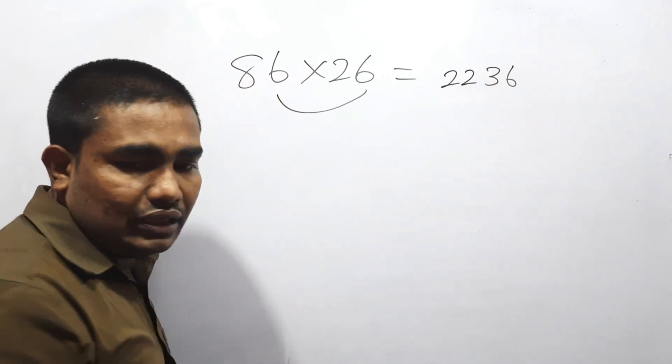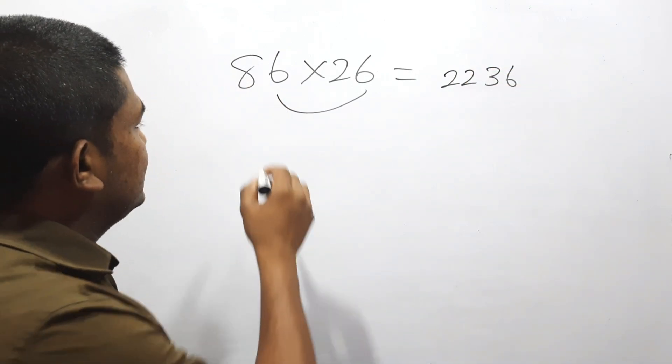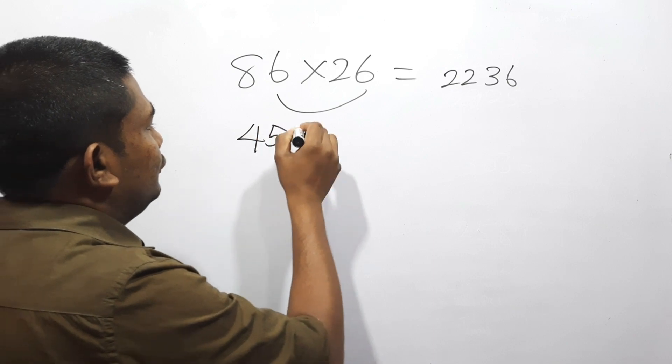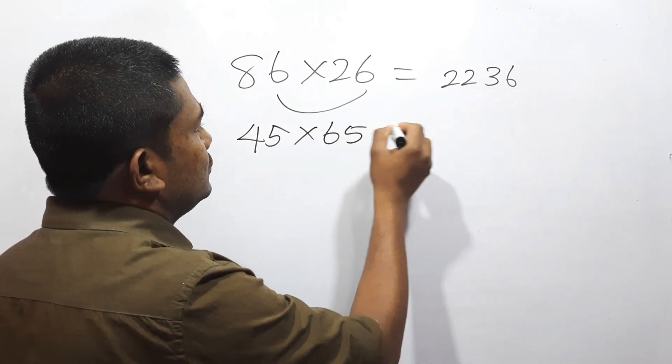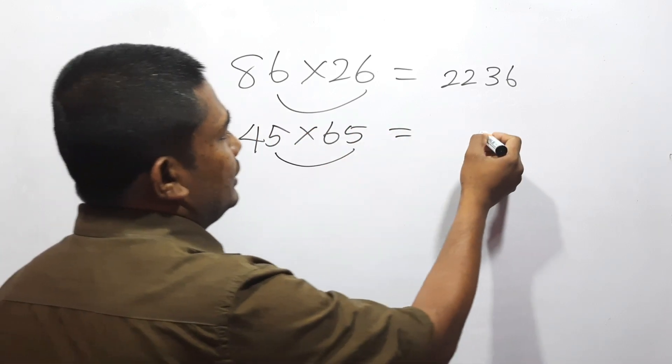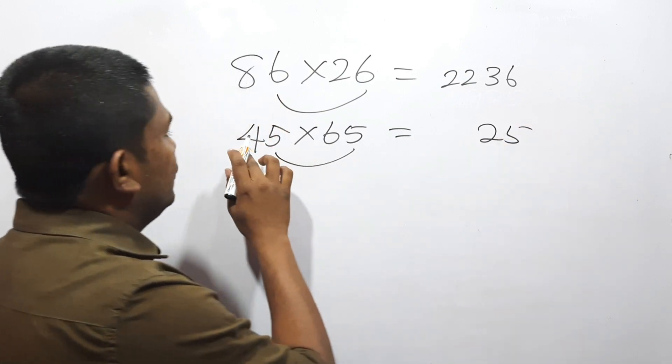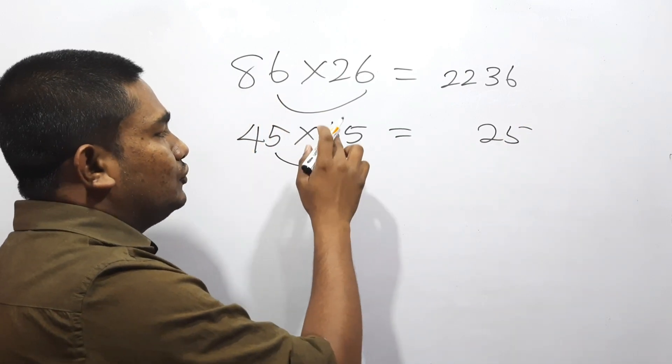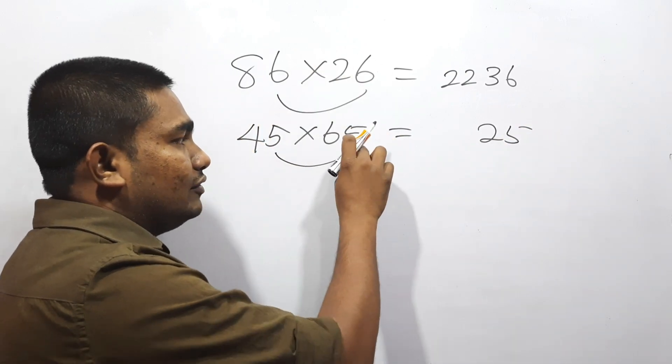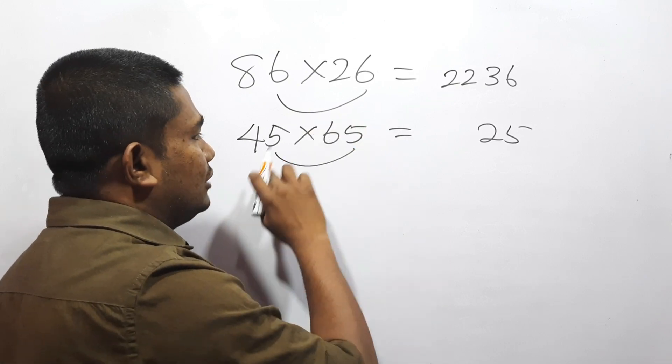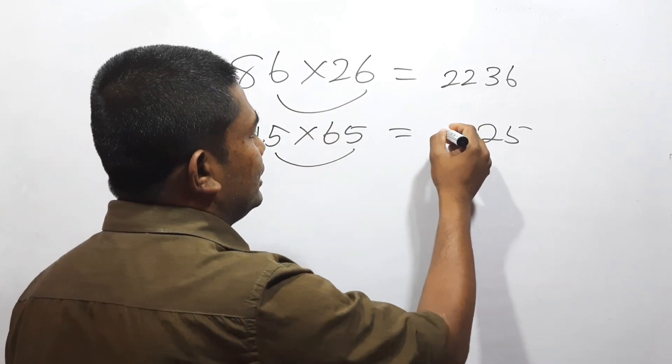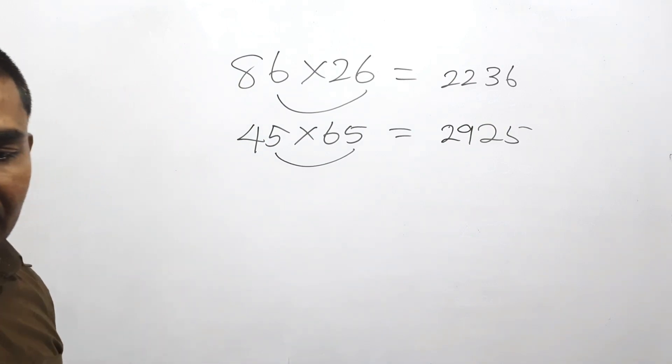Next one: 45 into 65. 5 into 5 is 25. 4 into 6 is 24. We need to add the unit place number, so 24 plus 5 is 29. The answer is 2925.